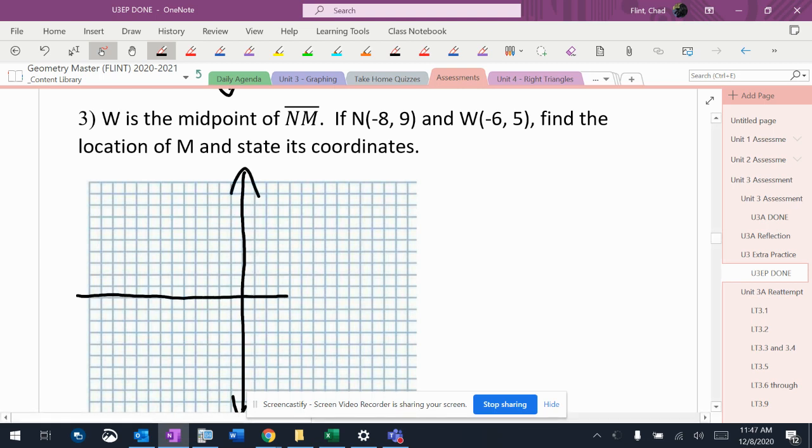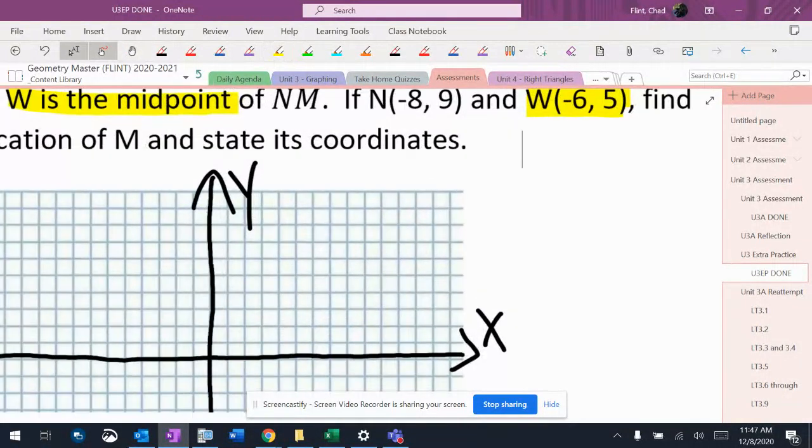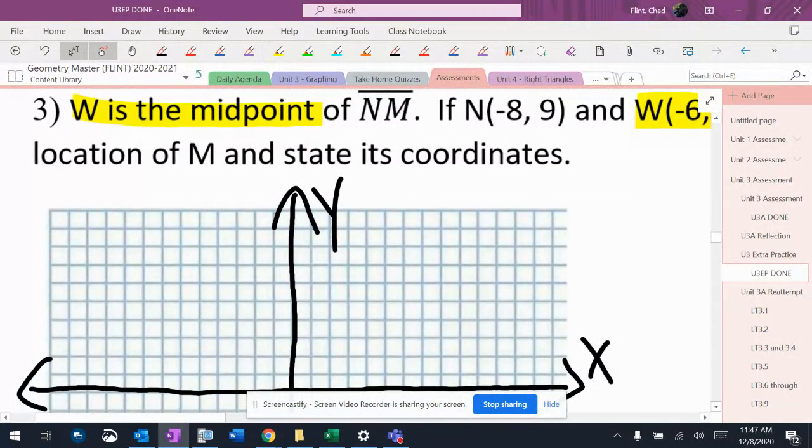Okay, so next here, another problem where it's asking me to find something. Again, read it carefully. It says W is the midpoint, and then it gives me W right there. So I have to now go ahead and find the other endpoint knowing the midpoint. And again, this really breaks down to some reading stuff sometimes. Did you read the problem carefully enough to make sure you know what you were doing?